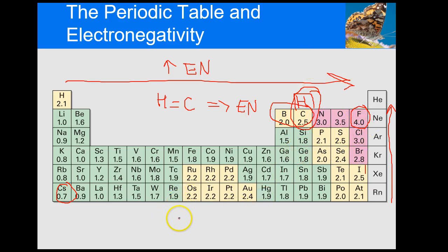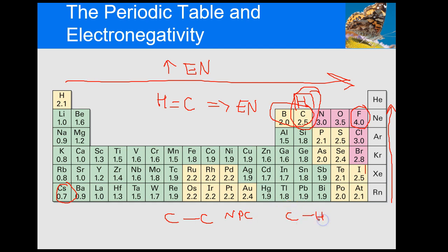Let's apply this. If we have carbon attached to carbon — they are equal atoms with equal electronegativity, so neither pulls more than the other. The electrons are equally shared, making this a nonpolar covalent bond. Same rule applies to any identical atom pair, whether fluorine-fluorine or hydrogen-hydrogen. Now carbon attached to hydrogen — since carbon and hydrogen are equal in electronegativity, this is also a nonpolar covalent bond.